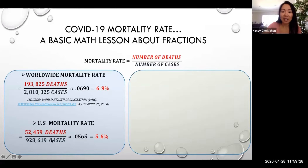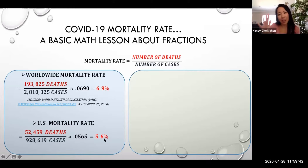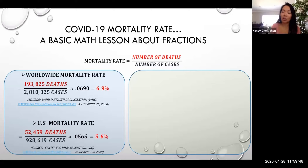If you want to take a closer look at the United States, we have 52,459 deaths divided by 928,619 cases. We get the decimal 0.0565, which when rounded becomes about 5.7%. That is from the CDC, the Center for Disease Control. And whatever I present in this PowerPoint, I will always source it, and the source I give you will be, in my opinion, a very reputable source.